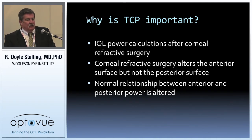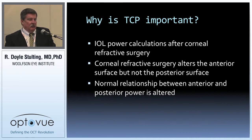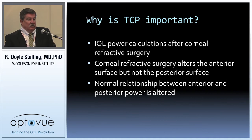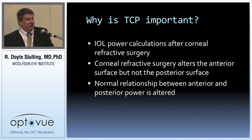Then we learned about topography, so that we could look at the front surface generally and learn more about it. But the missing part of the puzzle is the posterior corneal power, which is measurable by the OCT. As we move into refractive cataract surgery, this is becoming much more important because patients are demanding more accuracy. In the world of toric lenses, we need to determine not only the anterior corneal toricity, but the posterior corneal toricity as well.